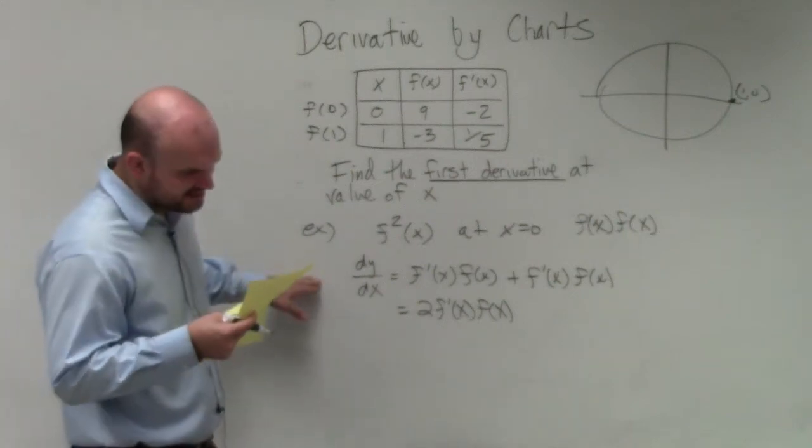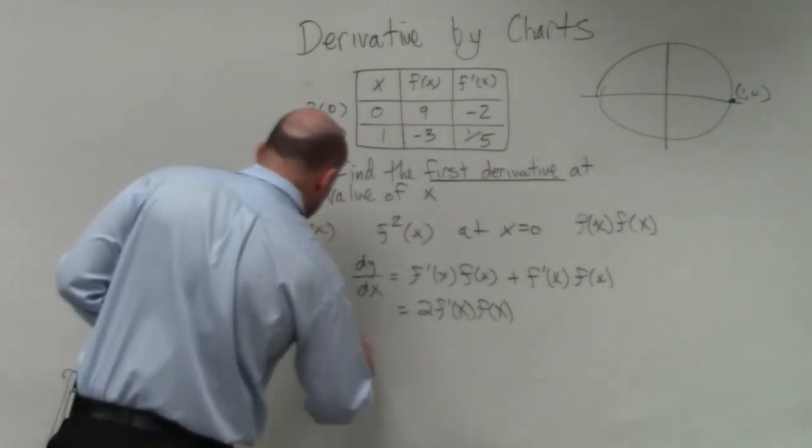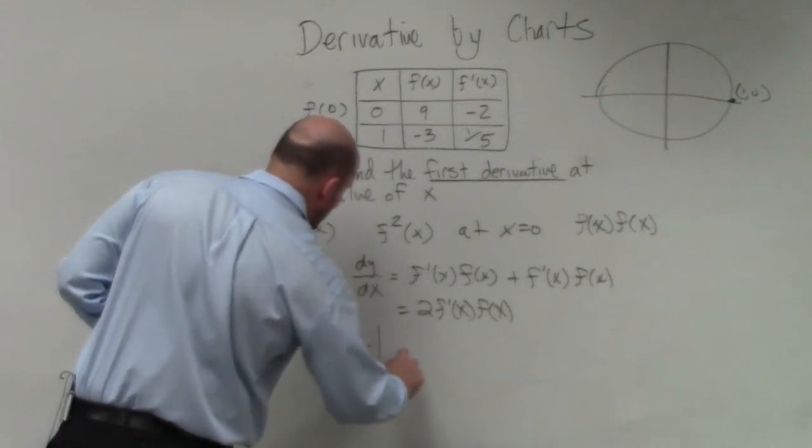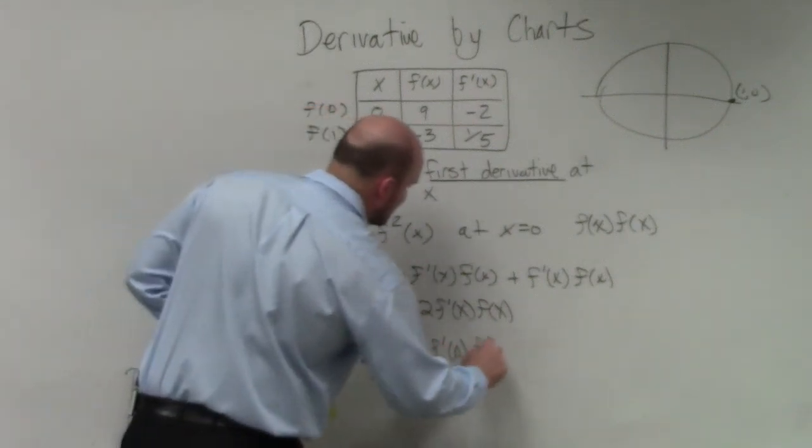Now they're saying this is at x equals 0. So now we need to evaluate at x equals 0. So I can write dy over dx such that x is equal to 0. So it's two times f prime of 0 times f of 0.